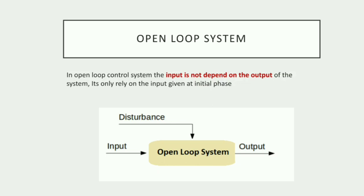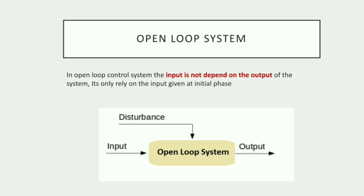In an open loop control system, the input does not depend on the output of the system — it only relies on the input given at the initial phase. We have the input and we have the output, and any disturbance will mix with the input and appear as the output. For example, if I am explaining something to you, I am giving the input and you are directly receiving the output — that is an open loop system. Any noise that comes through is a disturbance that reaches you directly.